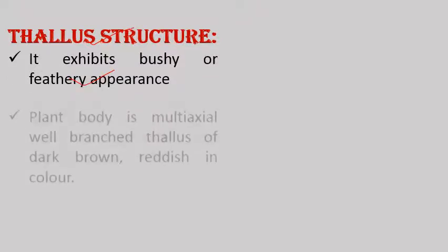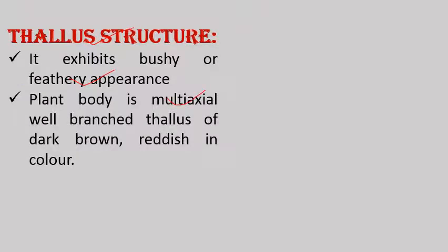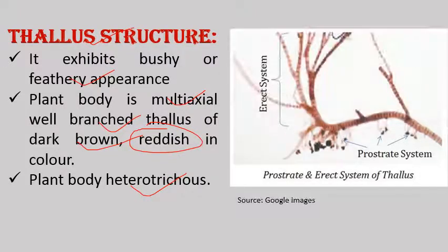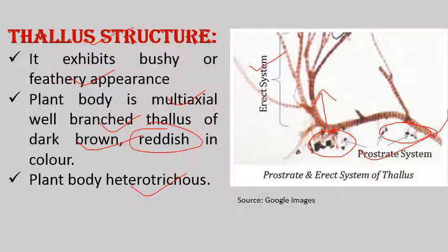Regarding thallus structure: Polysiphonia shows a bushy thallus structure and exhibits a bushy or feathery appearance. The plant body is multi-axial, meaning it consists of more than one axis, and is well branched. The thallus is dark brown to reddish in color due to pigments like chlorophyll A, chlorophyll D, and biliproteins — R-phycoerythrin and R-phycocyanin — which are responsible for the reddish color. It shows heterotrichus habit, in which the plant body is divided into an erect and a prostrate system. The prostrate system consists of root-like or holdfast-like structures that help with attachment to the substratum, and the upright erect system arises from this prostrate system.